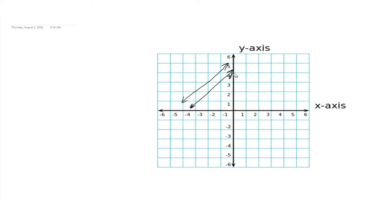Perpendicular lines are lines that meet at a 90 degree angle. So the two lines you see on the graph are more or less perpendicular, given my stickman drawing. So that's an idea of graphically what we're looking at when we talk about parallel and perpendicular lines.